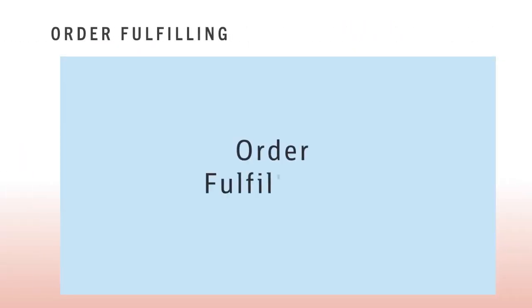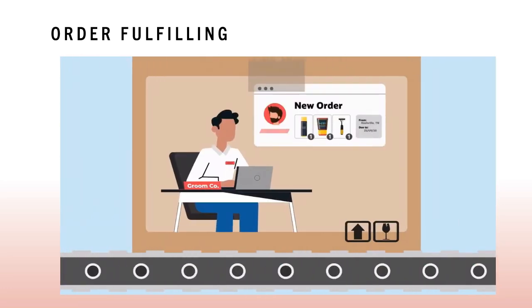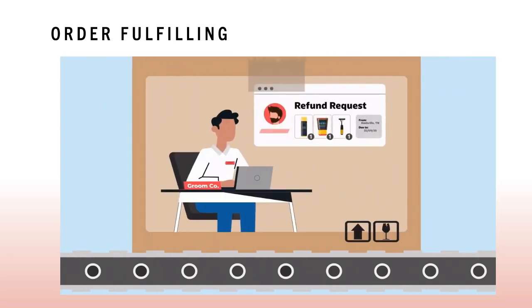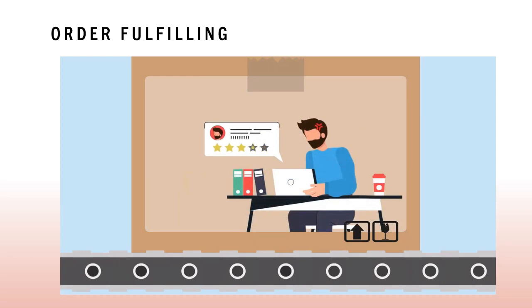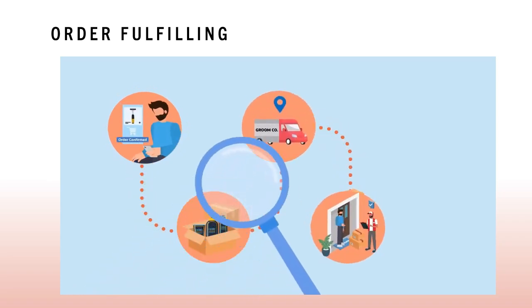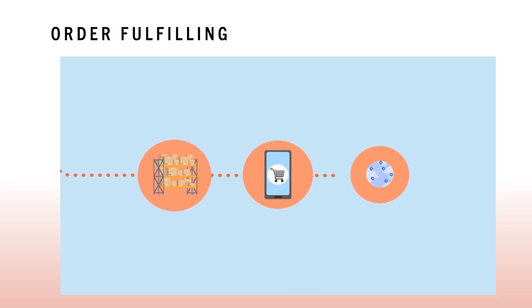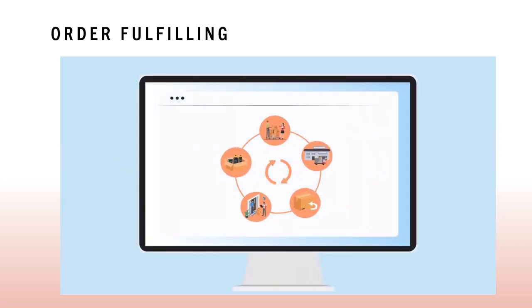Information systems automate many steps in business processes that were formerly performed manually, such as checking a client's credit, or generating an invoice and shipping order. But today, information technology can do much more. New technology can actually change the flow of information, making it possible for many more people to access and share information, replacing sequential steps with tasks that can be performed simultaneously, and eliminating delays in decision making. New information technology frequently changes the way a business works and supports entirely new business models.